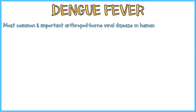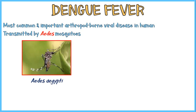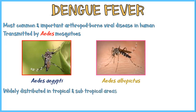Dengue fever is the most common and important arthropod-borne viral disease in humans. It is transmitted by mosquitoes of the genus Aedes. Two species of Aedes mosquitoes have been identified as vectors of dengue virus: Aedes aegypti and Aedes albopictus.